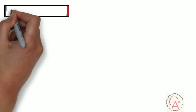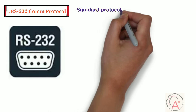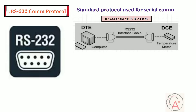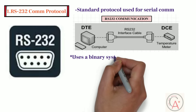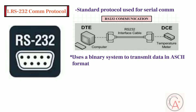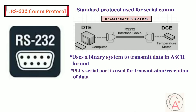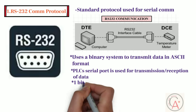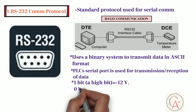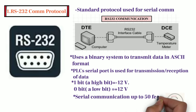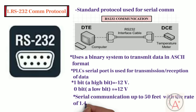Let's start with the RS-232 communication protocol. RS-232 is a standard protocol used for serial communication. It is used for connecting a computer and its peripheral devices to allow serial data exchange between them. It uses a binary system to transmit data in ASCII format. A PLC serial port is used for the transmission and reception of data. It works by sending and receiving voltage — a high bit is represented by minus 12 volts, and a low bit by plus 12 volts. RS-232 is used in serial communication up to 50 feet with a rate of 1.492 kilobits per second.